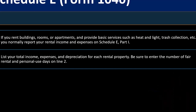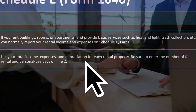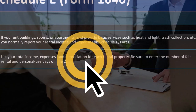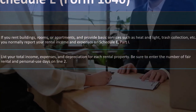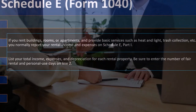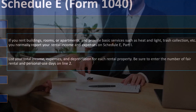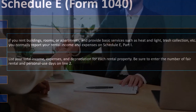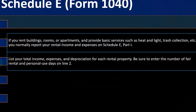Be sure to enter the number of fair rental and personal use days on line two. If you used it for personal use, that muddies up the situation, because now you might have a vacation property that you both rented and used for personal use.